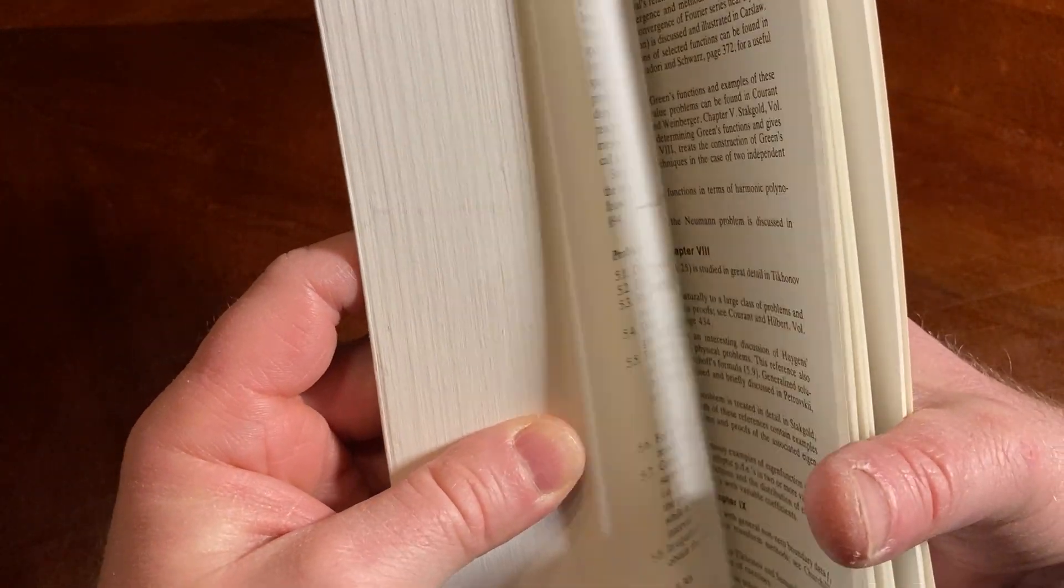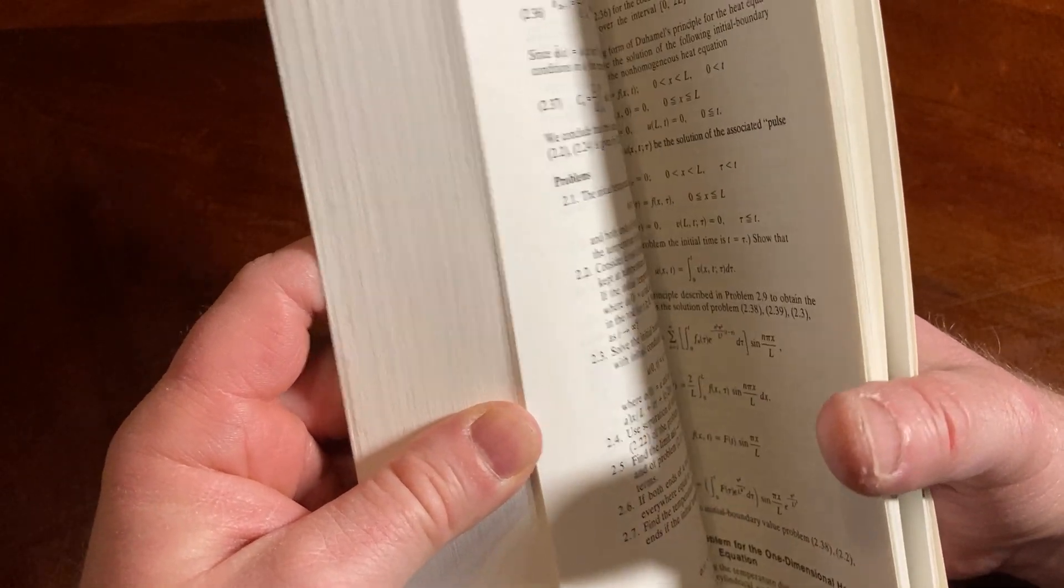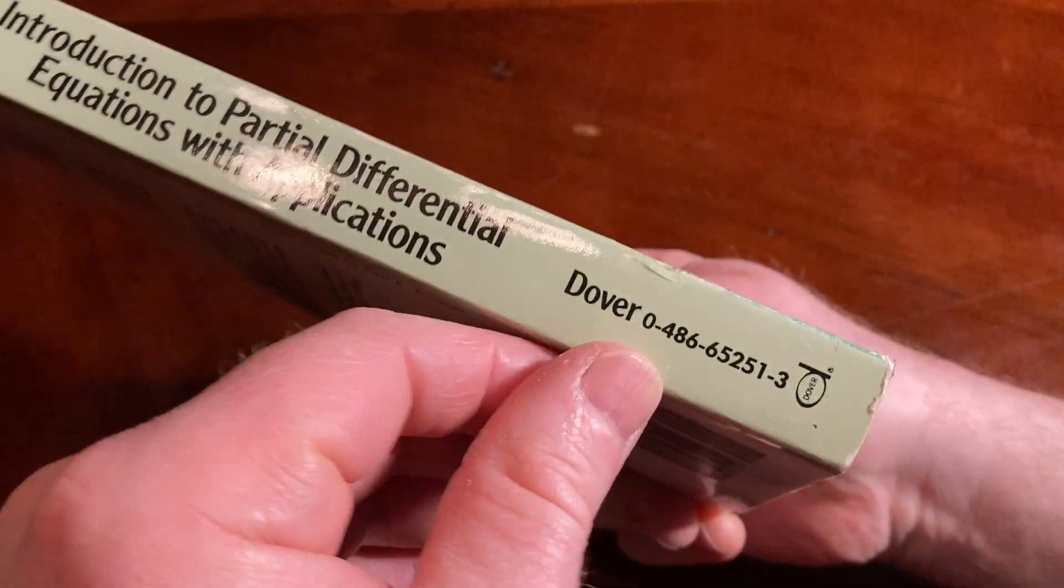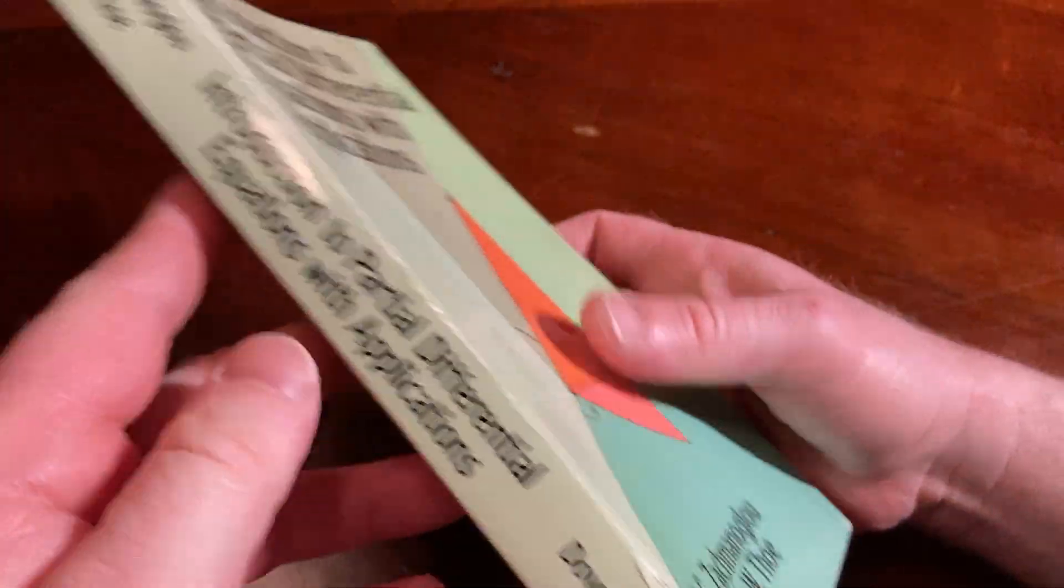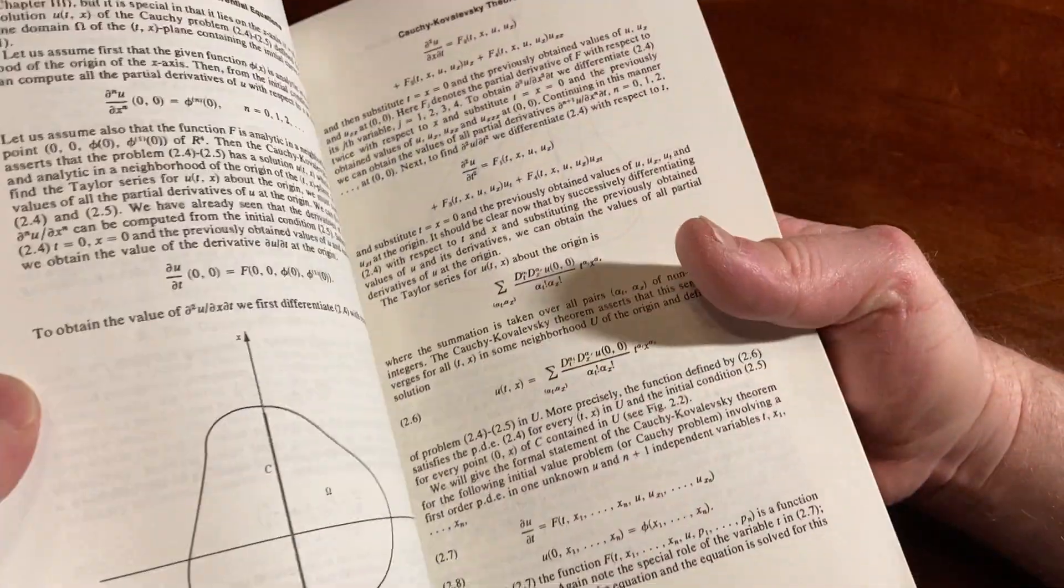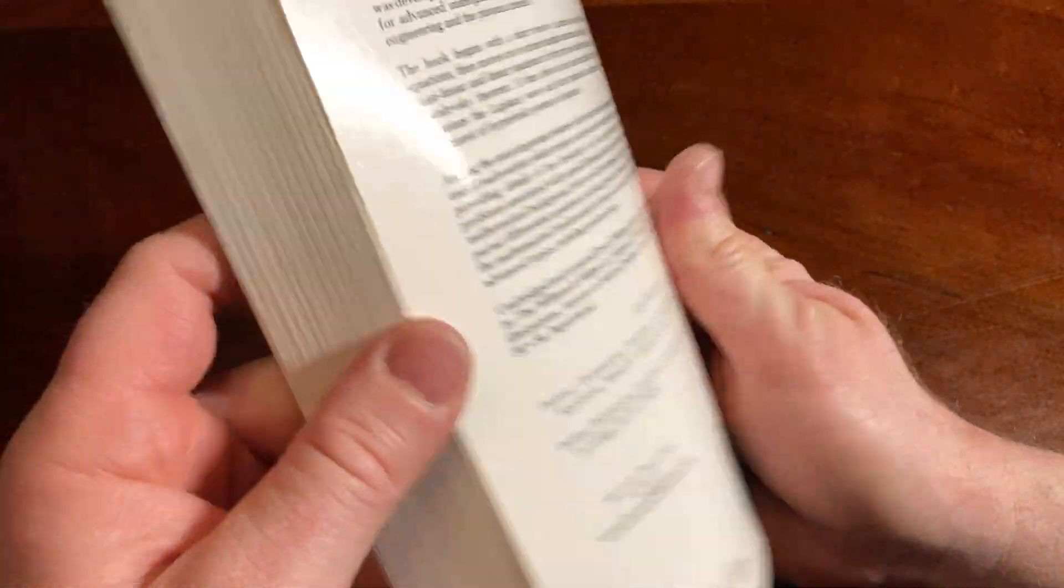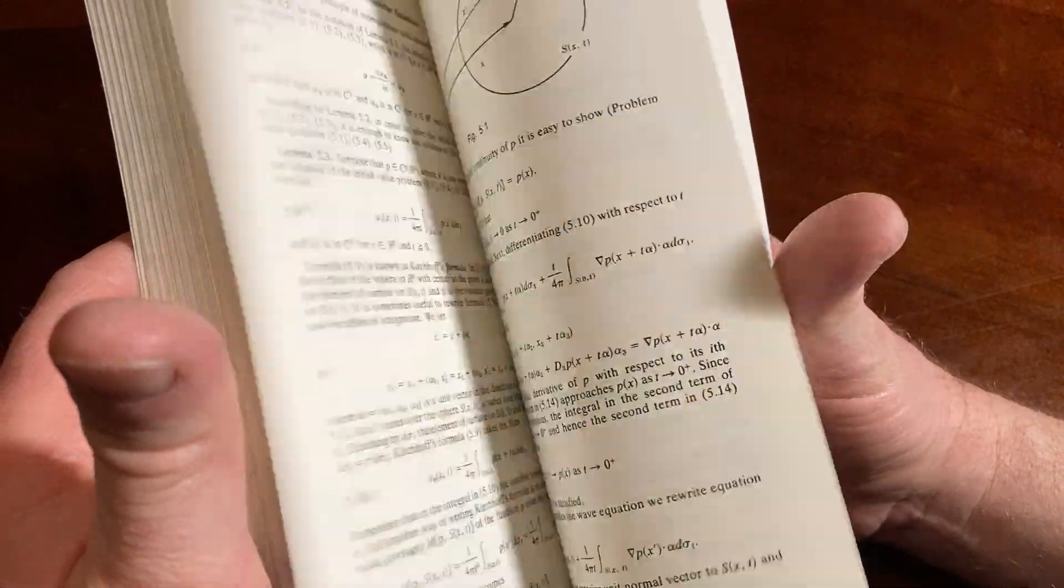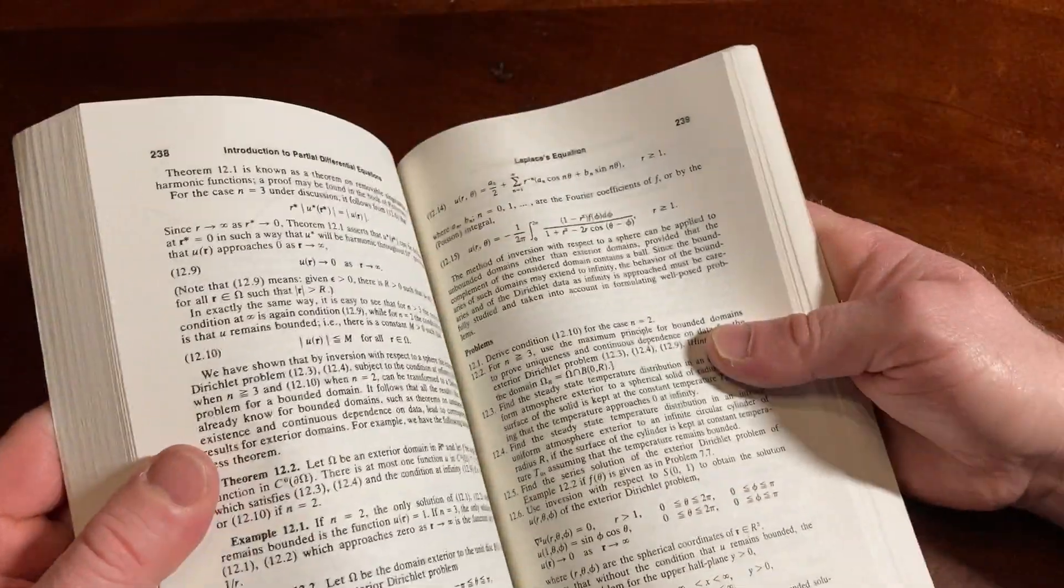Another big plus is that it's cost effective, widely available, and not super expensive. It's a Dover book, meaning it was reprinted by Dover, a company that takes older books and reprints them. They do a great job and have a ton of fantastic math and science books. This is an older book.